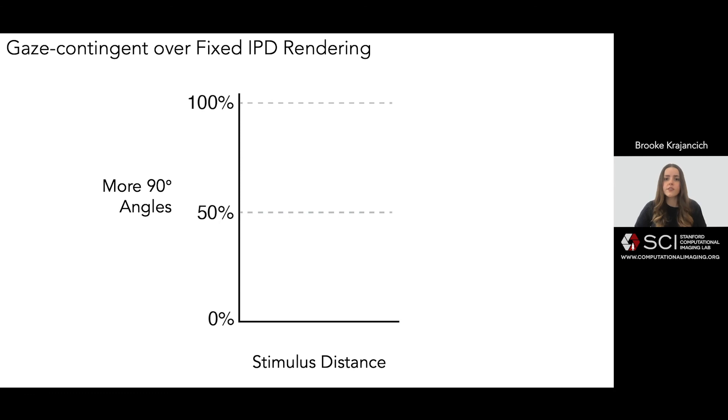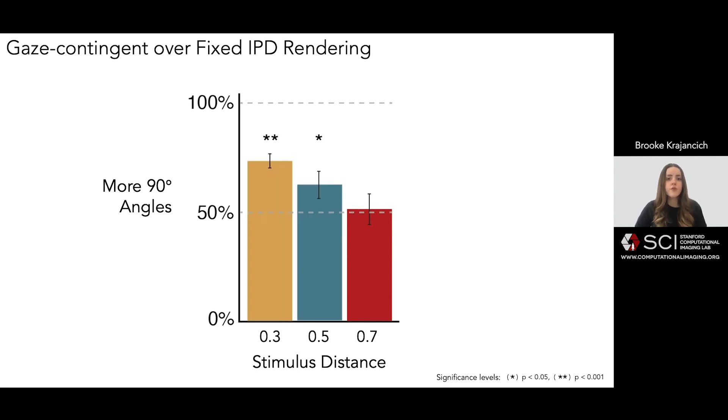Upon conducting the trials, we found that patterns at a depth of 0.7 meters were not significantly different. However, as the user verged closer to 0.5 and 0.3 meters, our rendering approach was found to show angles significantly closer to 90 degrees.